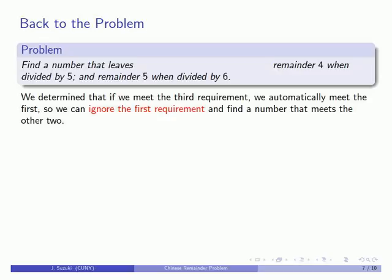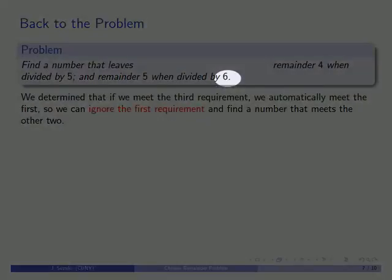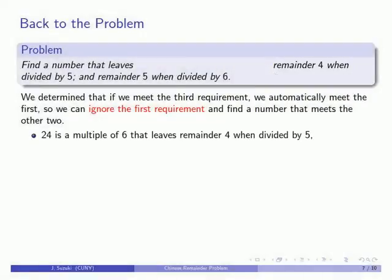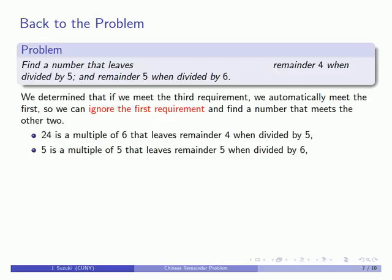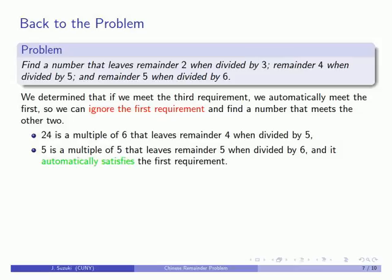With divisors 5 and 6, I want to find a multiple of 6 that leaves remainder 4 when divided by 5, and a multiple of 5 that leaves remainder 5 when divided by 6. We find that 24 works for the first condition, and 5 works for the second — it's a multiple of 5 and it does leave remainder 5 when divided by 6. Importantly, this satisfies the first requirement we ignored, so we have something that satisfies all three requirements. Adding 24 and 5 together gives 29. The product of the two divisors, 5 and 6, is 30. Since we can't subtract 30 from 29, this is actually the smallest solution.